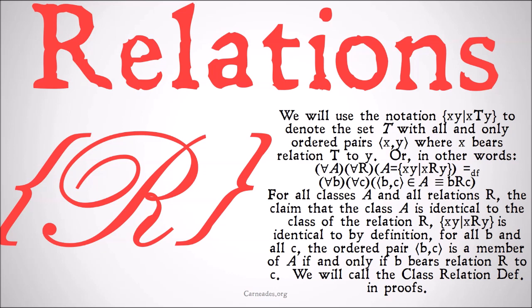Or in other words, for all A and all R, A equals this class of the relation R means by definition: for all B and all C — where B and C are not in italics, they are objects, they are things, not necessarily sets or classes — the ordered pair BC is a member of class A is materially equivalent to B bears relation R to C. We'll call this the class-relation definition in proofs.